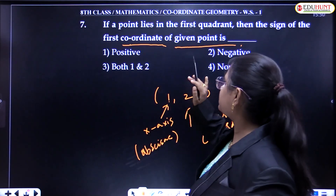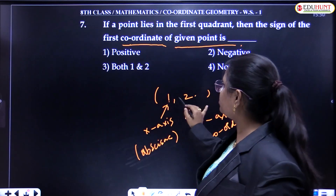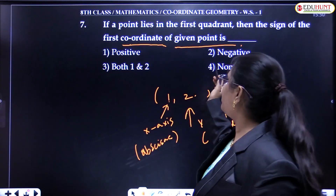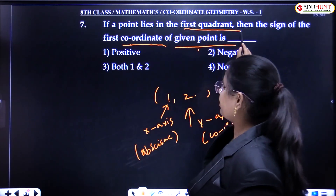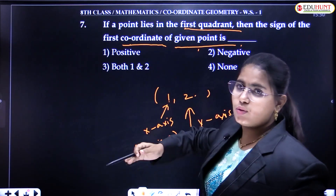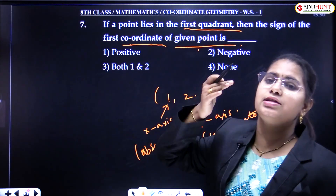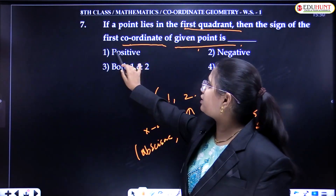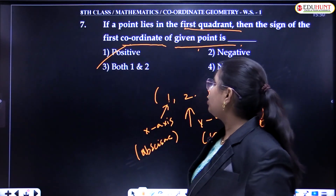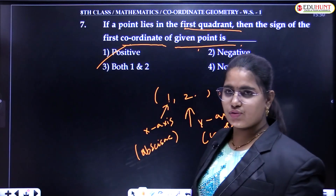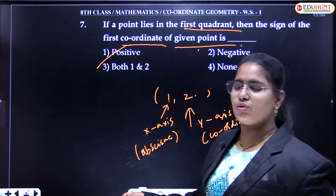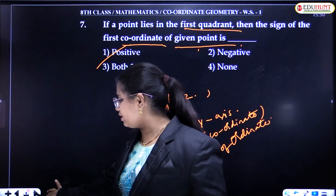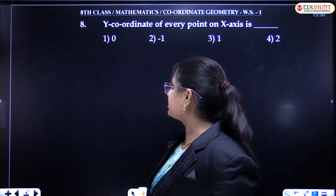They are asking about the sign of both coordinates of a given point in the first quadrant. In the first quadrant, both coordinates are positive. So the answer is positive.